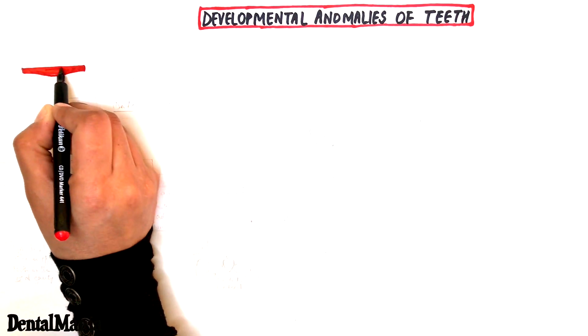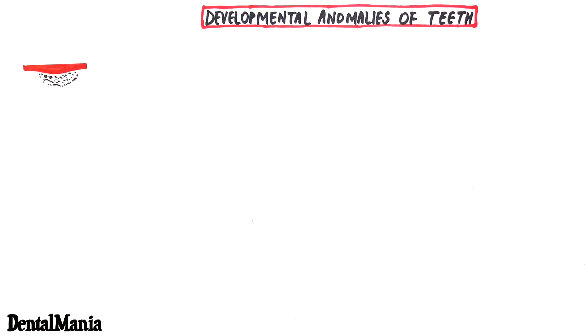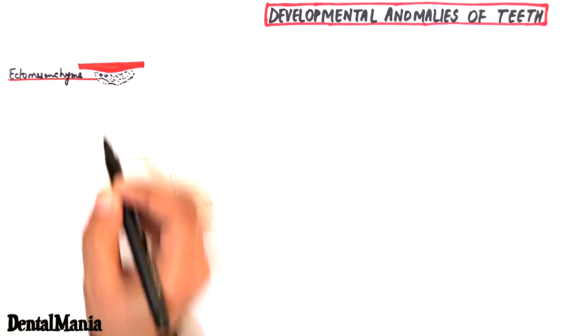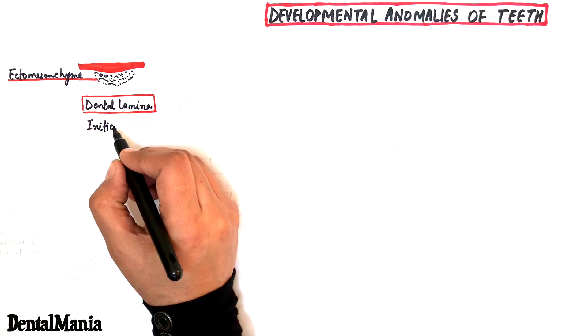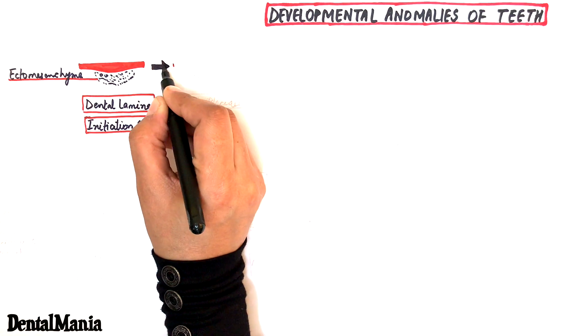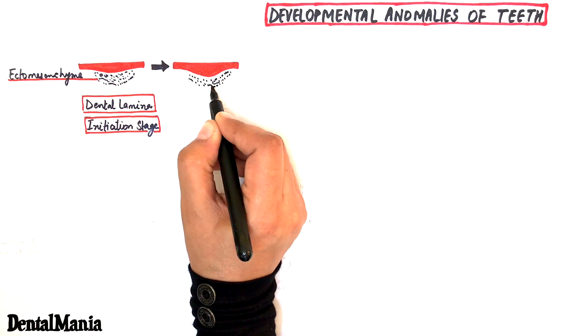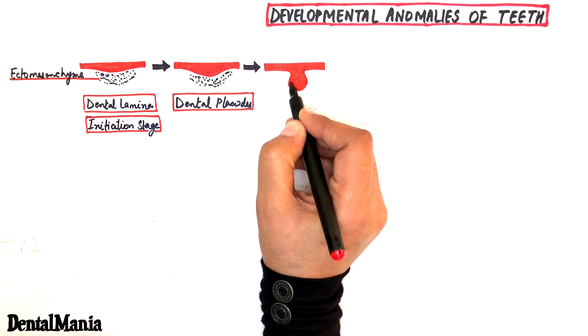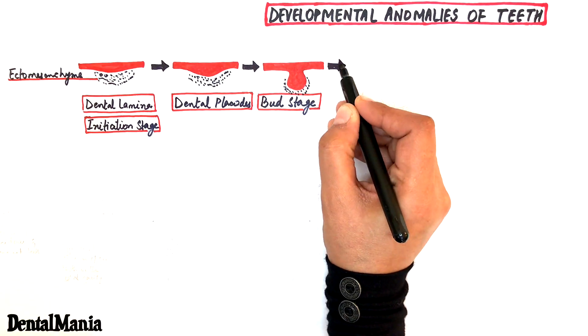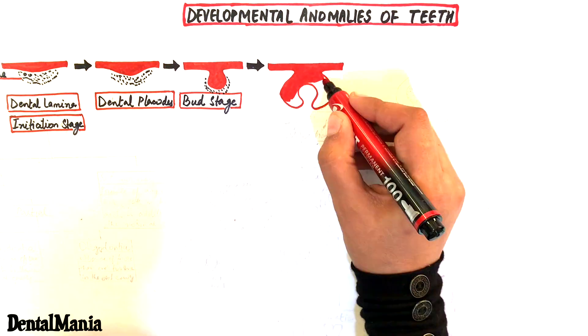The development of the tooth started from the initiation stage where the dental lamina was first formed from the primary epithelial band. Localized epithelial thickenings called the dental placodes were formed in the dental lamina for each specific tooth type. The dental placodes then entered the bud and then the cap stage which was also called the proliferation stage.